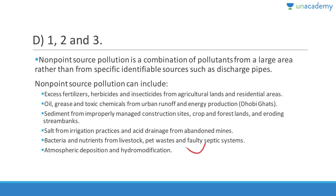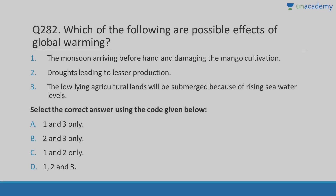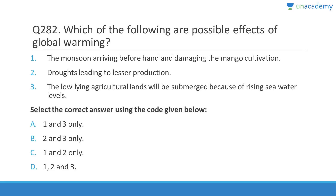Non-point source pollution is basically a combination of pollutants from a large area rather than from specific identifiable sources such as discharge pipes. It includes excess fertilizers, oil, grease, toxic chemicals, sediments from construction sites, salt from irrigation practices, bacteria from livestock, atmospheric deposition, hydromodification, etc.